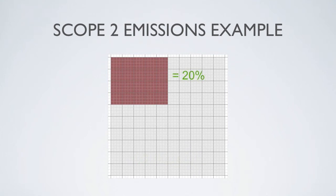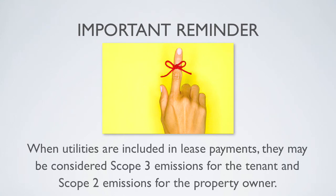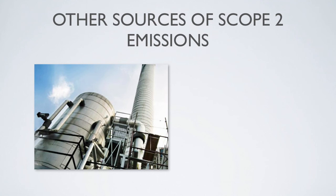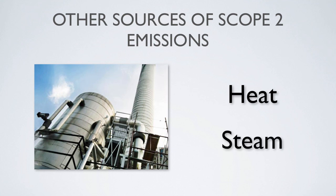This method is a little bit less accurate because it presumes that all the occupants use electricity equally, which may not be the case. In addition, this scenario can change the way in which the emissions are categorized. When utilities are included in lease payments, they may be considered Scope 3 emissions for the tenant and Scope 2 emissions for the property owner. This nuance varies with the protocol adhered to by the organization you are reporting to, so you should always check. The Greenhouse Gas Protocol, for example, considers this type of electricity consumption as Scope 3 emissions for the tenant and Scope 2 emissions for the building owner. Though we just talked about electricity here, the same data collection principles apply to purchases of heat and steam, which are the other sources of energy indirect Scope 2 emissions.